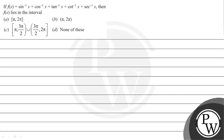Let's read the given question. The question states that if f(x) is equal to sin inverse x plus cos inverse x plus tan inverse x plus cot inverse x plus sec inverse x, then f(x) lies in the interval. The options are given below. The key concept to solve this question is that sin inverse x plus cos inverse x is equal to π/2.